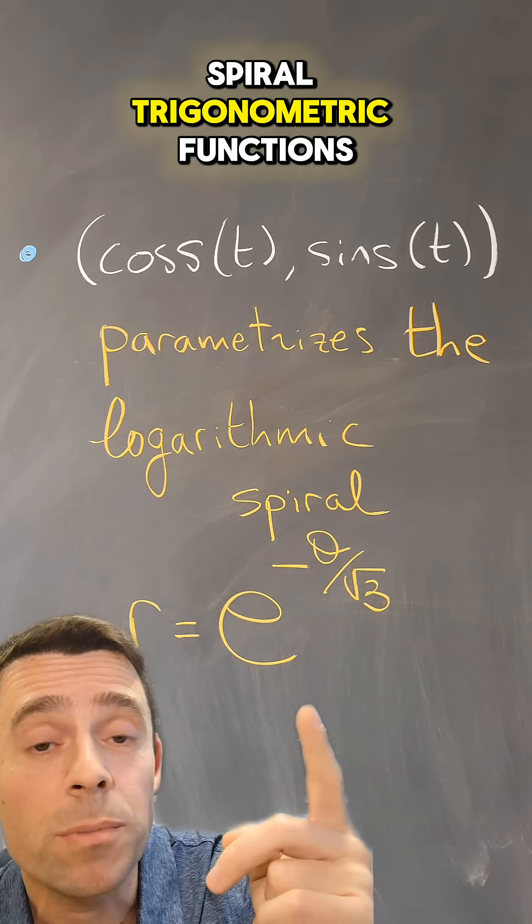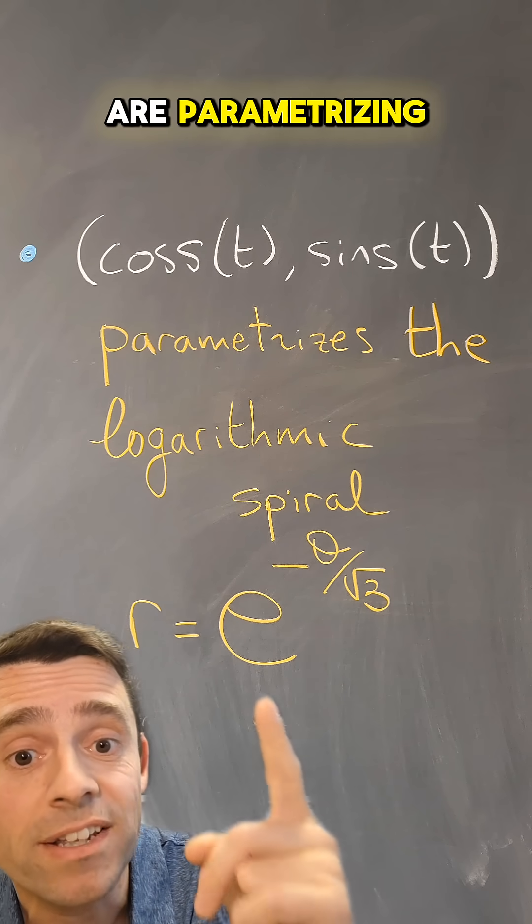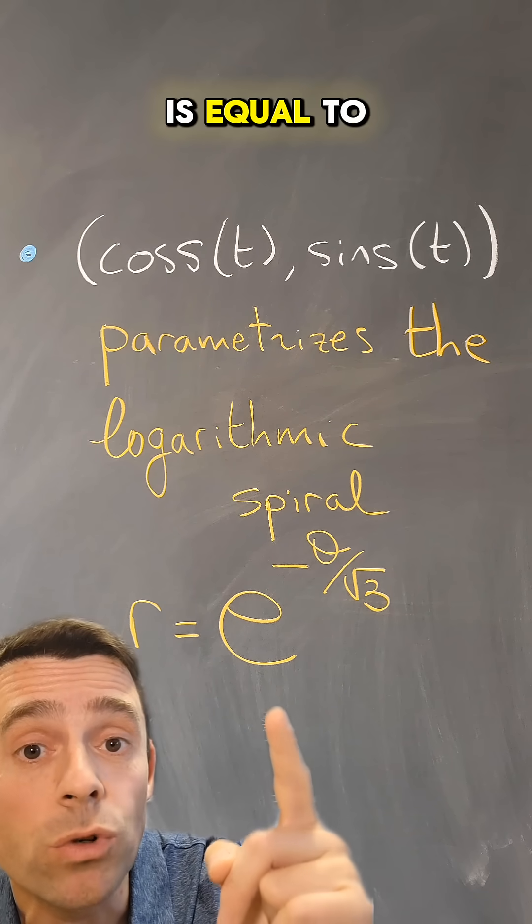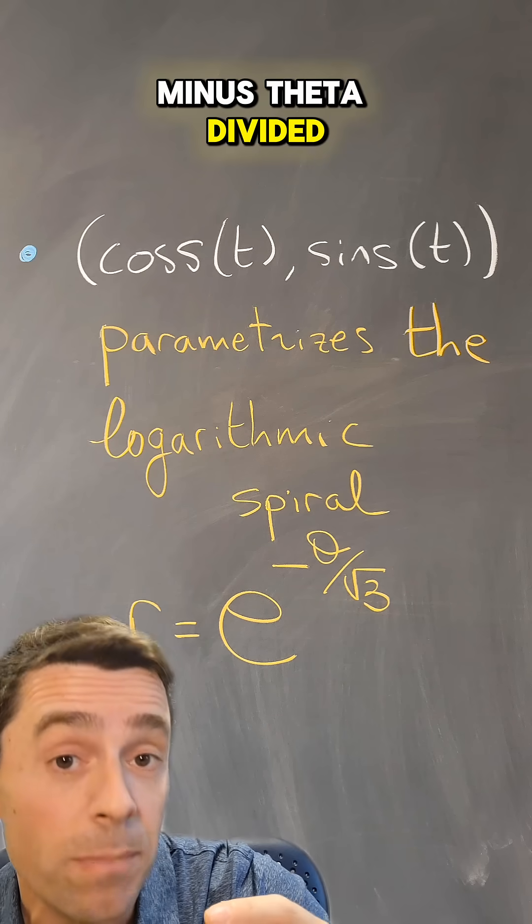And then the spiral trigonometric functions are parametrizing the spiral given in polar coordinates by r is equal to minus theta divided by the square root of three.